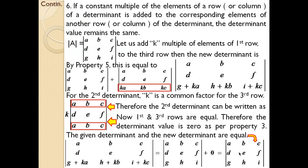Finally, the new determinant equals the original determinant a,b,c, d,e,f, g,h,i plus zero, which is just the original determinant. This proves the property: adding a scalar multiple of one row to another row does not change the determinant value. This final property uses more than two previously discussed properties combined. We will discuss further cases under matrices in the coming class. That's all — thank you.